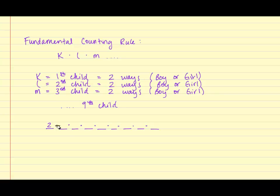And so again, for option number one, there are two ways, option number two, there are two ways, option number three, all the way up to the ninth child. And so we have two to the ninth power, which is 512.